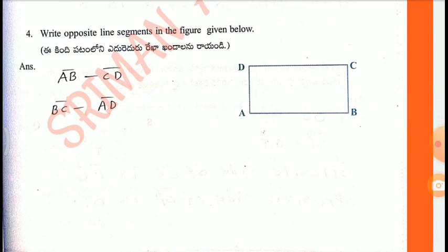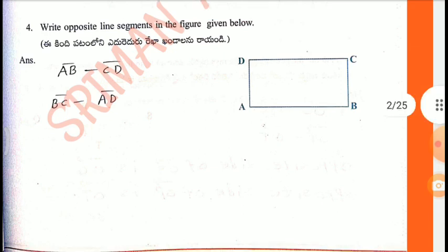Fourth one: Write opposite line segments in the figure given below. In the figure, A, B, C, D are opposites. BC and AD are opposites.